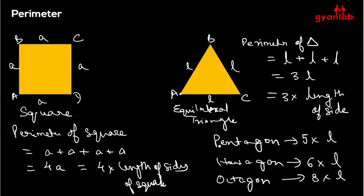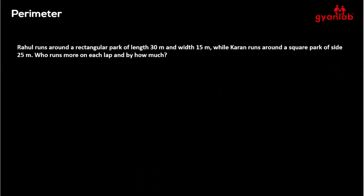So for any regular figure — a square, equilateral triangle, pentagon, hexagon, or octagon — the perimeter is always the number of sides multiplied by the length of each side. This is a useful special case. Let's now take up a question and find out how to get the answer.